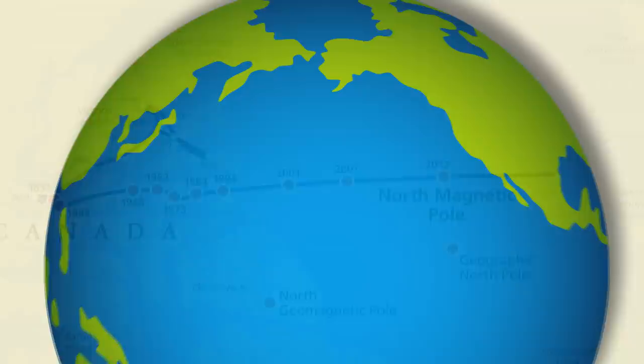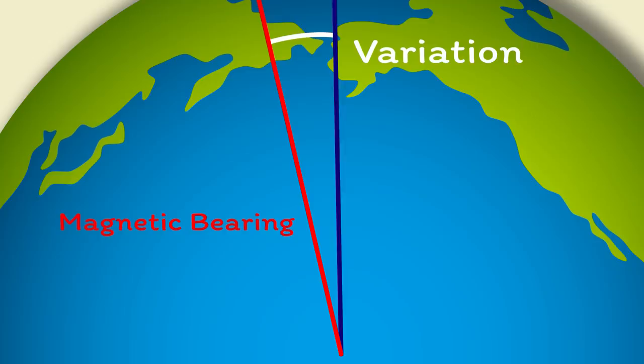Anyway, the movement doesn't really matter because you can account for it by applying variation to magnetic compass bearings to turn them into true bearings.